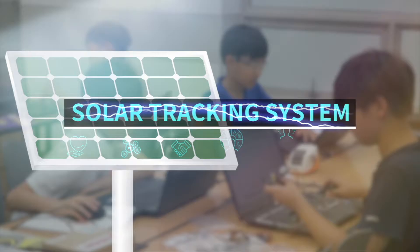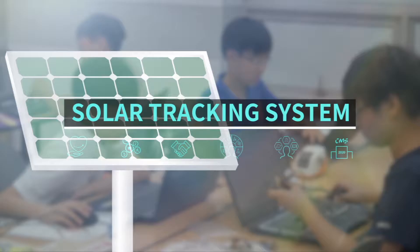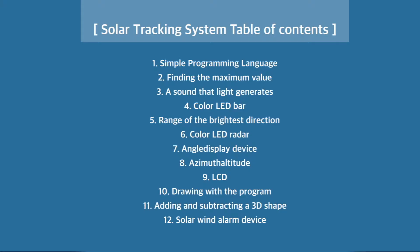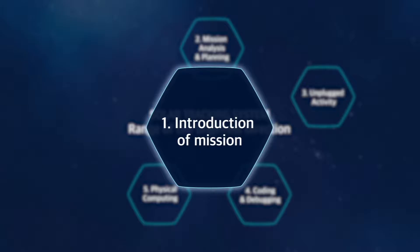The Solar Tracking System Class is an ICT Convergence Educational Class exploring scientific, mathematical, and engineering methods needed to track the location of the sun. Next are the details of the Solar Tracking System Class from Week 5, called Finding the Range of the Brightest Direction.